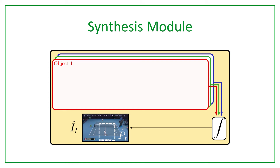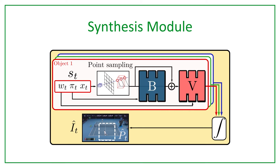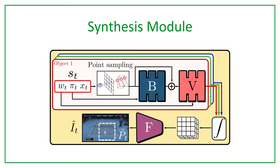Let's now look at it in more detail. We find NERV to be a natural choice and model the scene as a composition of radiance fields, one for each object. We adopt an MLP V to represent the object in a canonical pose and an MLP B to deform the canonical value into the desired object pose. To reduce computation, our method regresses a grid of features, which a feature renderer F transforms into the final image.